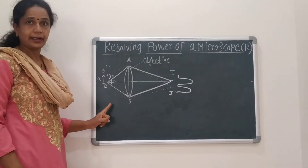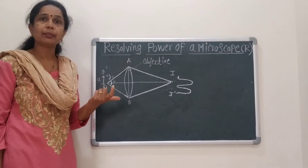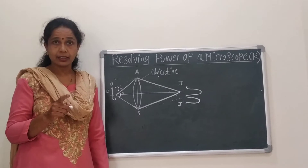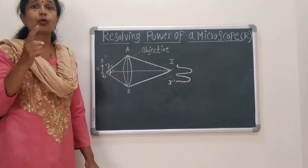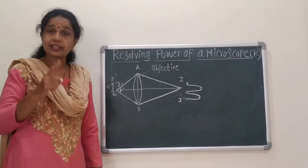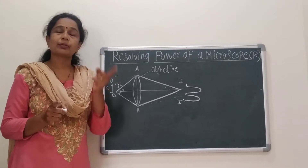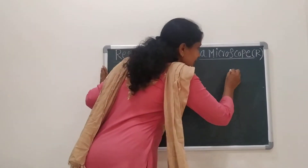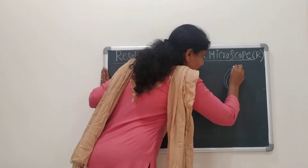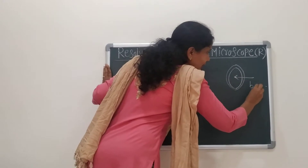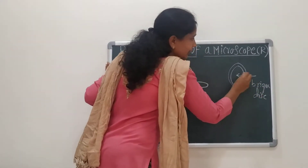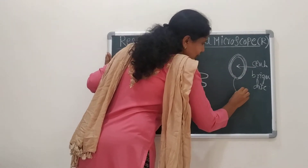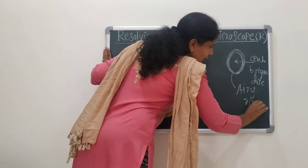Let us consider this ray diagram. In the case of a microscope, the diffraction pattern of two point objects consists of a central bright disc surrounded by concentric rings, called the Airy disc and rings. This theory was given by the scientist Abbe, who was the first to explain it and apply it to Fraunhofer diffraction. The central bright disc is surrounded by the Airy rings.